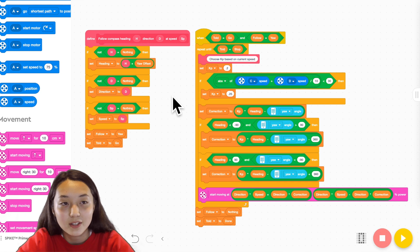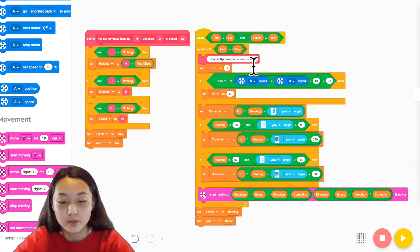For proportional control, we scale the error by the constant k. However, we found that a low speed requires a higher k. So right here we look at the speed and if we are moving slow we increase k.